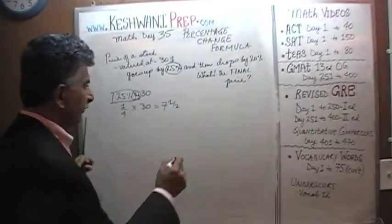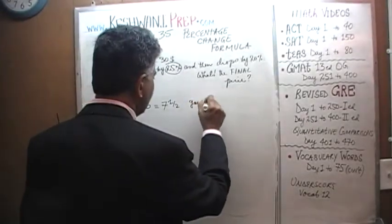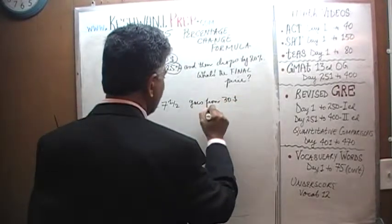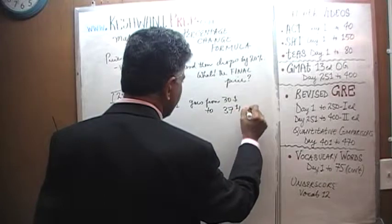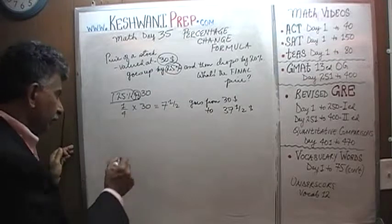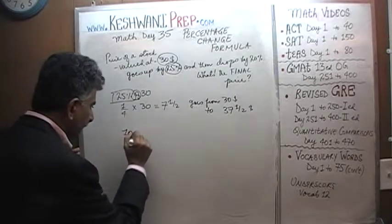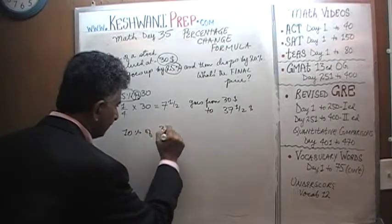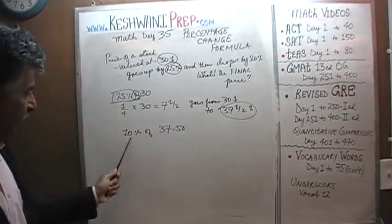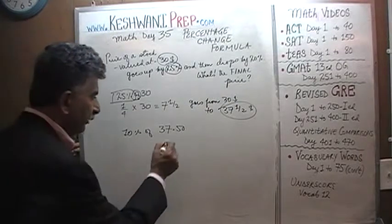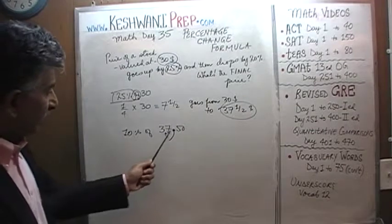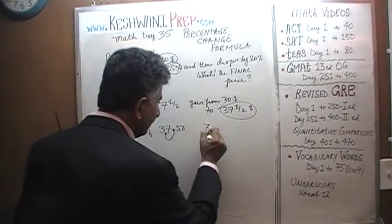So the first, the price goes up by 7.50. So it goes from $30 that we start out with to $37 and a half. Then we are told that it drops by 20%. What do you suppose 10% of $37.50 is going to be? Whenever we have to figure out 10% of something, we just move the decimal place by one spot to take a tenth of it. So it's going to be $3.75.